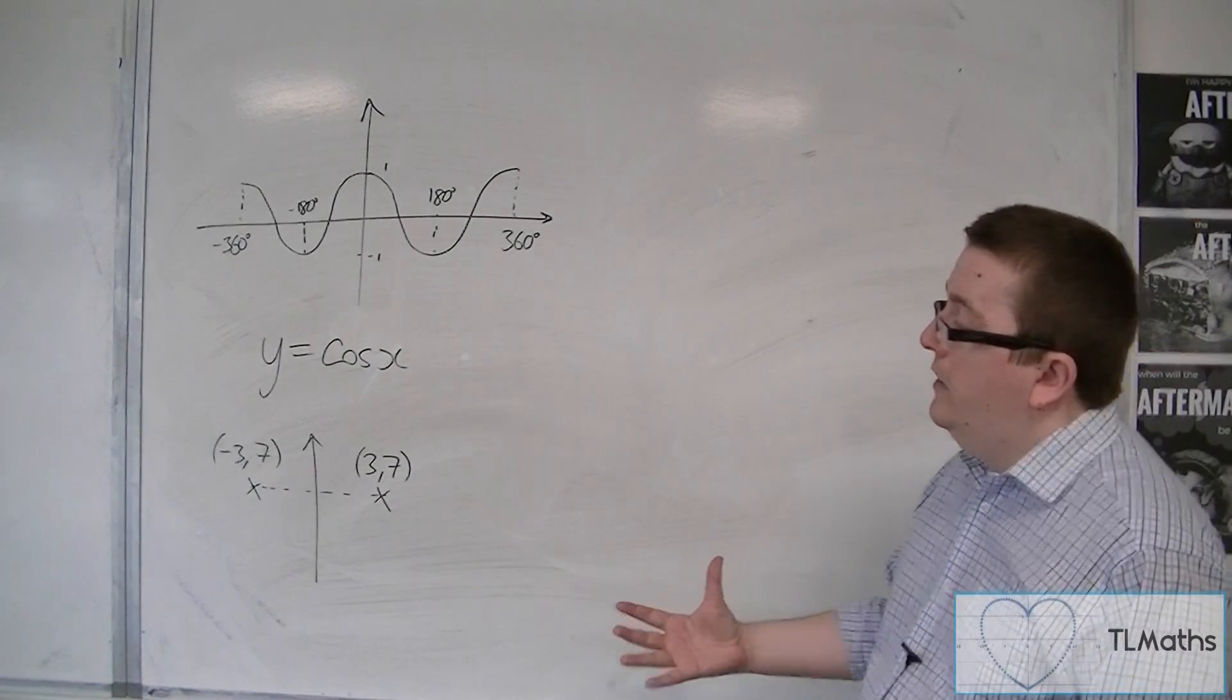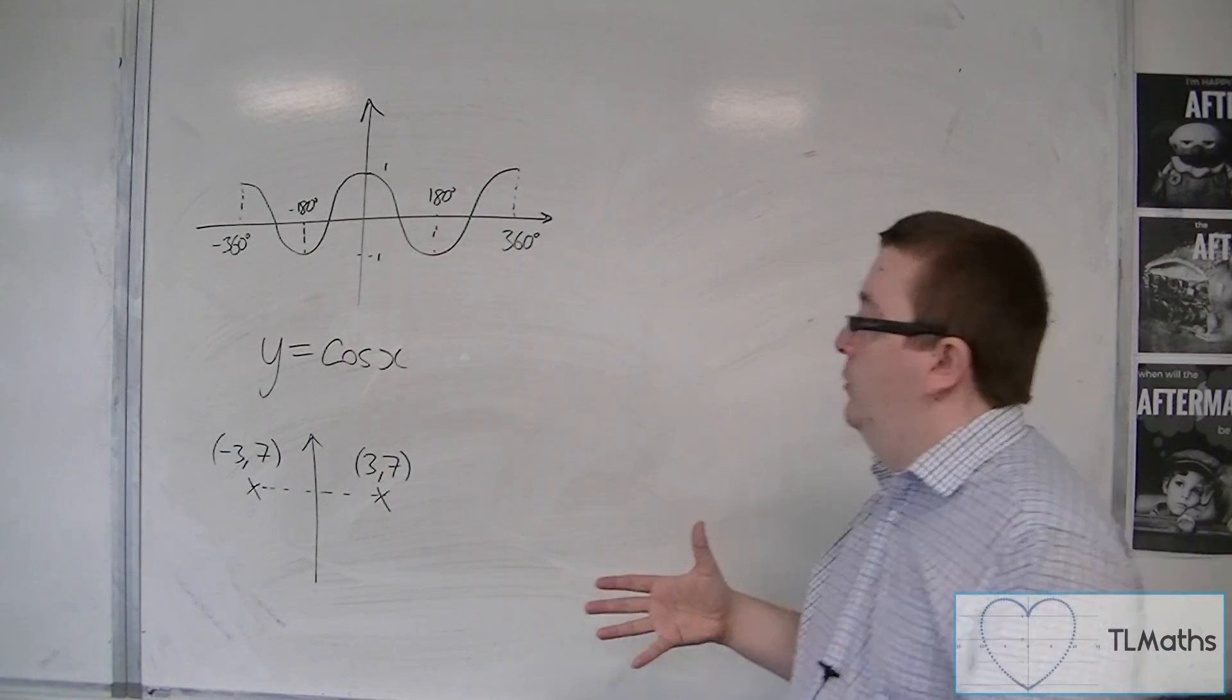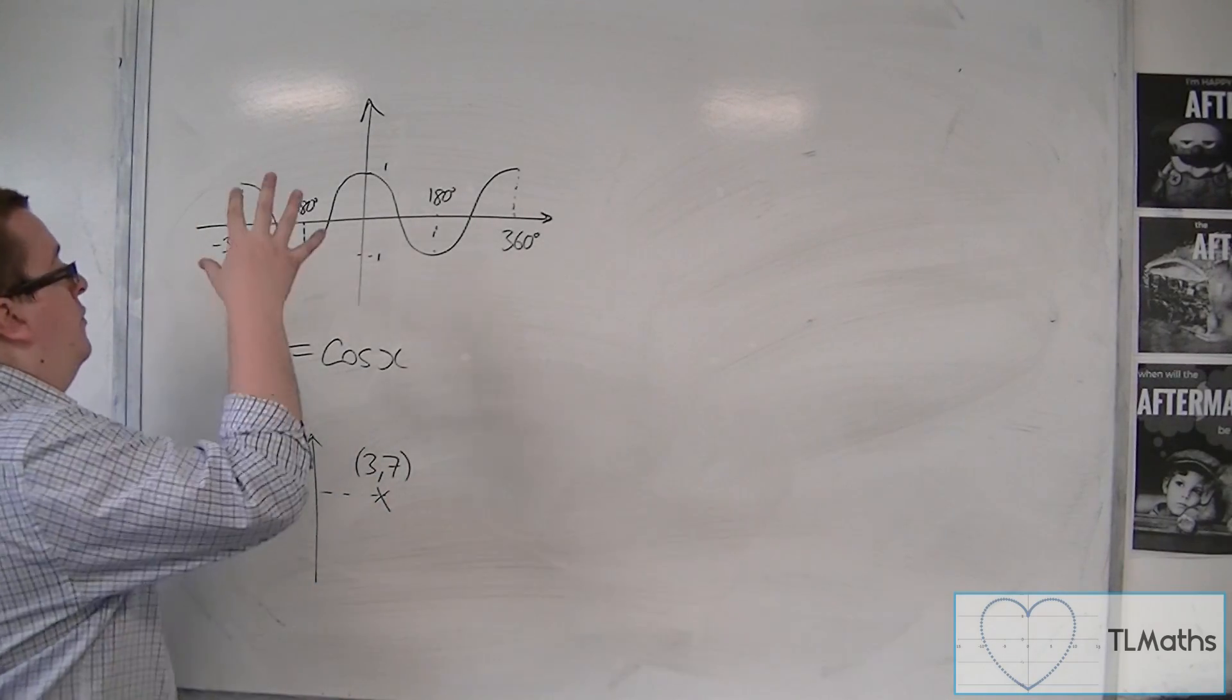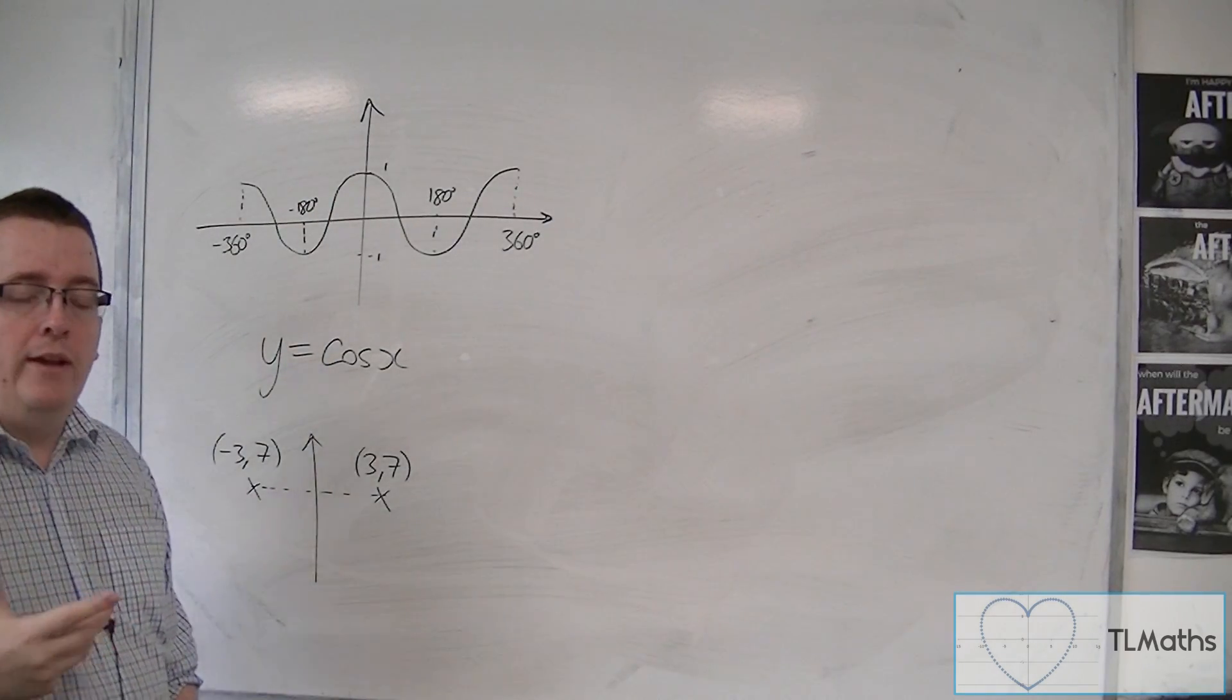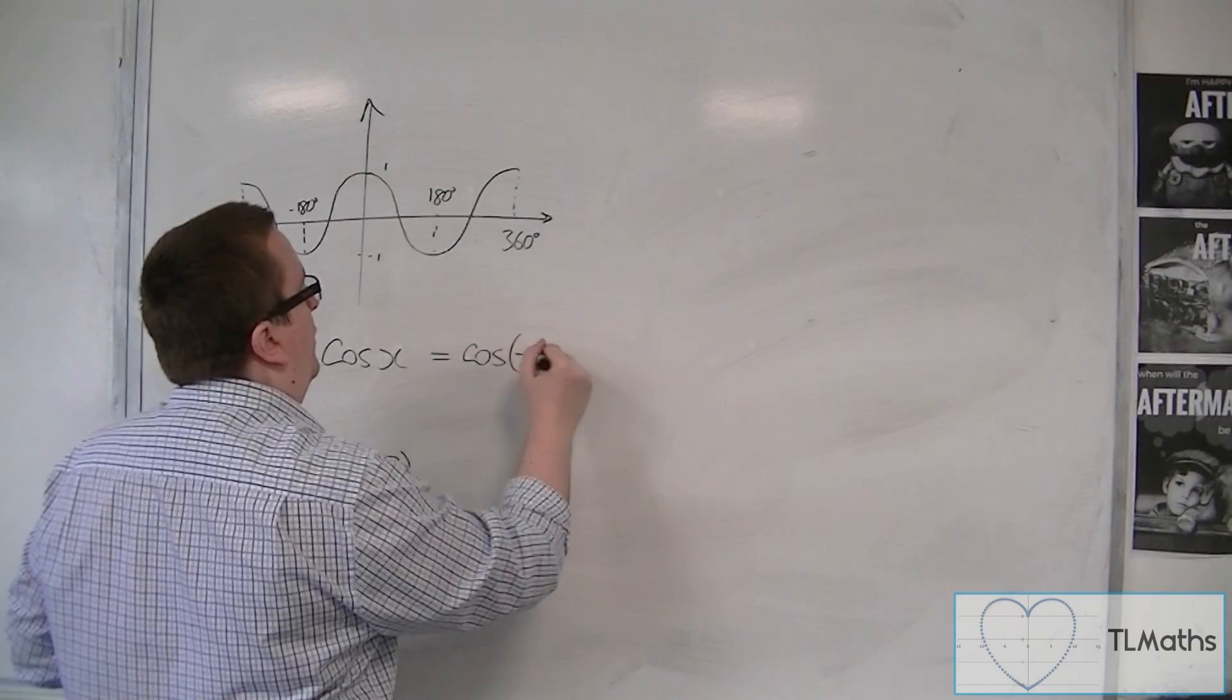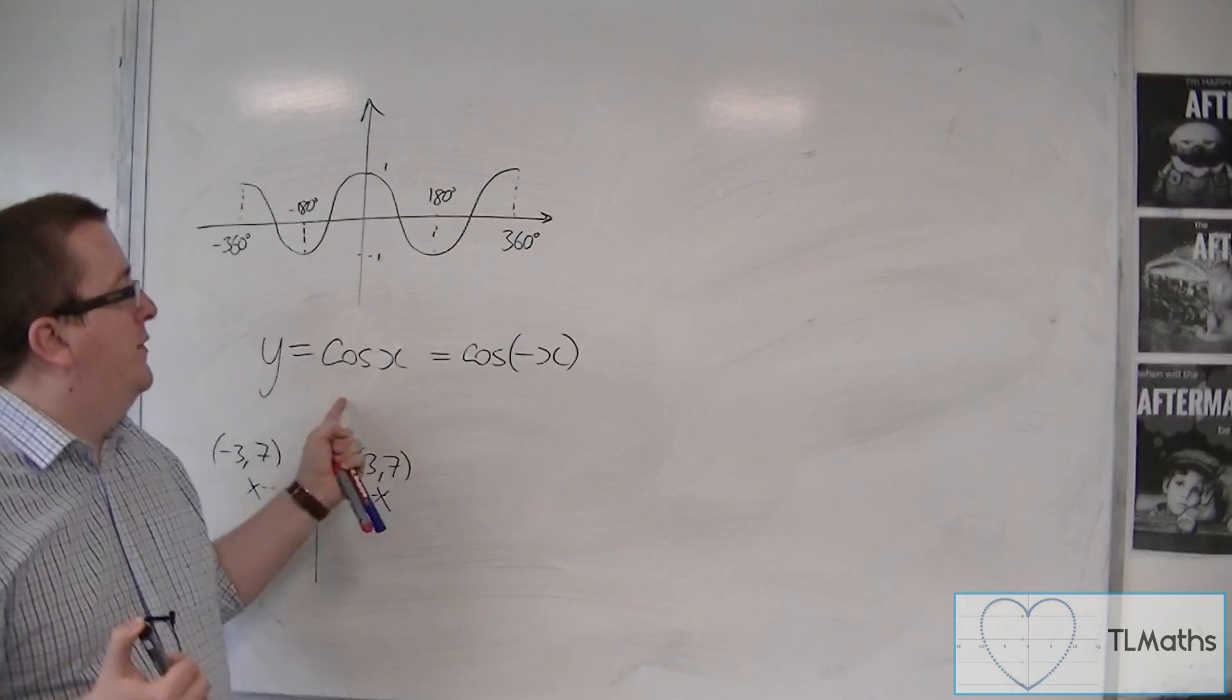So, effectively, the x-coordinate has been replaced with minus x, or vice versa. So, if you are replacing x with minus x when you reflect in the y-axis, and cosine doesn't change when it's reflected in the y-axis, that means that cosine of x is exactly the same as cosine of minus x. It doesn't matter whether your value here is negative or not, it will be exactly the same as cosine of x.